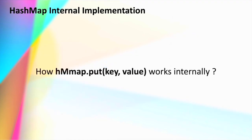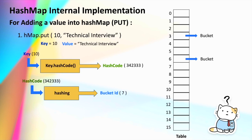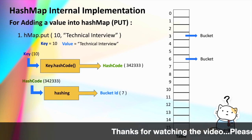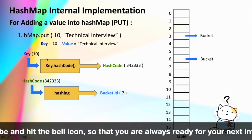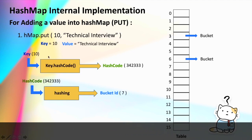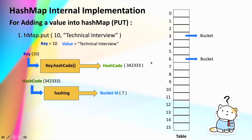Now let's go into detail to understand how our HashMap works internally for inserting data. For the first example, we are inserting the key-value pair 10 and 'technical interview'. HashMap actually performs two activities: first it generates the hash code for this key — let's take the example that for key 10 the hash code is 342333, an arbitrary number for demonstration. Once this hash code is generated, it is passed through another hashing function to generate the corresponding bucket ID — the index at which the data will be stored.